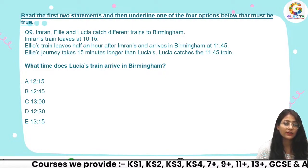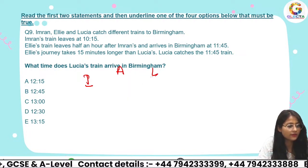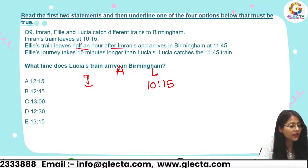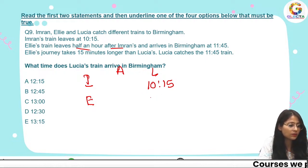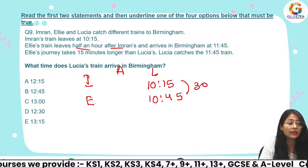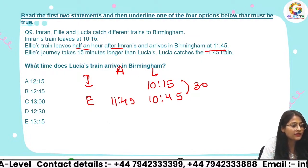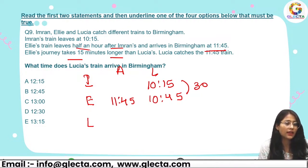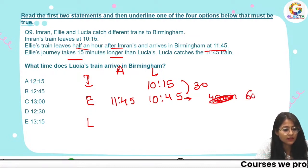Imran, Ellie, and Lucia catch different trains to Birmingham. Imran leaves at 10:15. Ellie's train leaves half an hour after Imran's, so at 10:45, and arrives at 11:45. Ellie's journey takes 15 minutes longer than Lucia's. Ellie's total journey is 60 minutes, so Lucia takes 45 minutes.